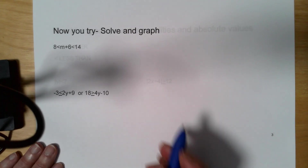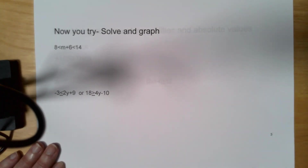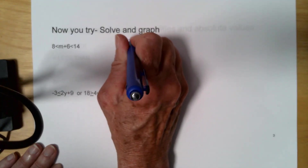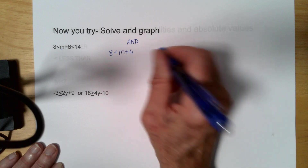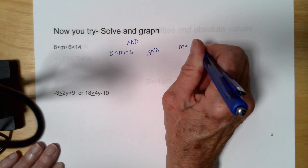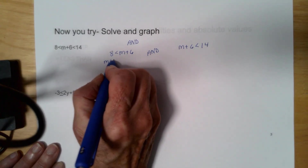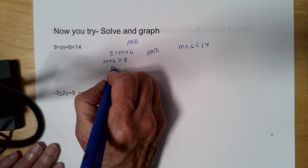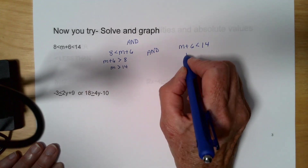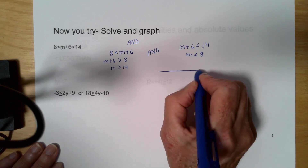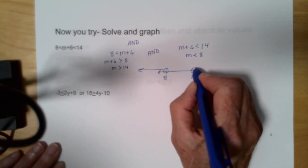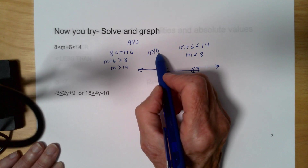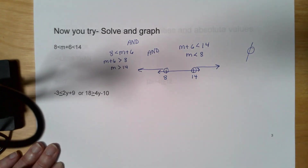Now you try a couple. This is an AND statement because the center section goes with both sides. So I have 8 is less than m plus 6 AND m plus 6 is less than 14. Switching sides: m plus 6 is greater than 8, so m is greater than 14. For the other: subtract 6, so m is less than 8. On the number line, 8 is on the left and 14 is on the right — the arrows go in opposite directions away from each other. Looking for what they have in common because it's an AND statement — they have nothing in common, so the answer is the empty set.